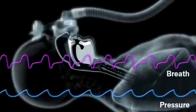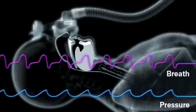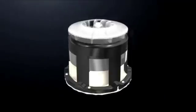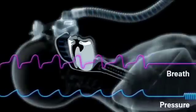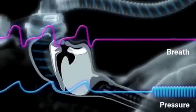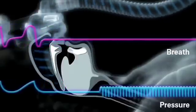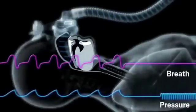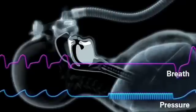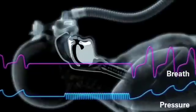ResMed's enhanced Autoset Algorithm can detect whether an apnea is obstructive or central. The device generates small amplitude pressure oscillations that flow down the tube and into the mask. The algorithm compares this pressure to its flow response. If the airway is closed, there will be little or no flow, and fluctuations in mask pressure will be barely diminished. The algorithm will then increase treatment pressure in proportion to the severity of the event.